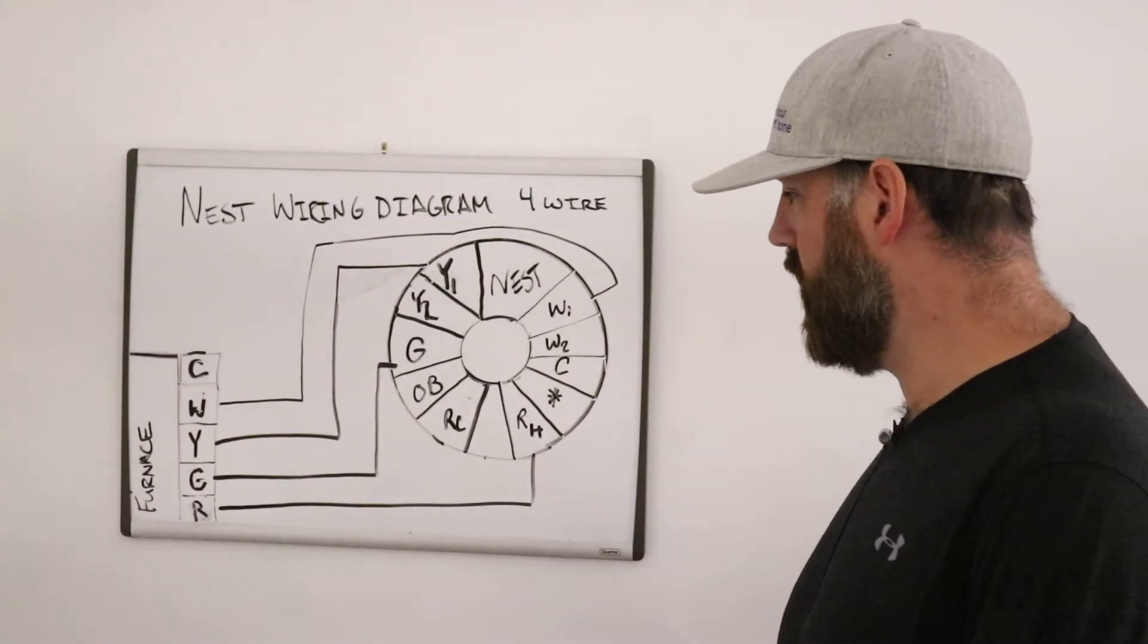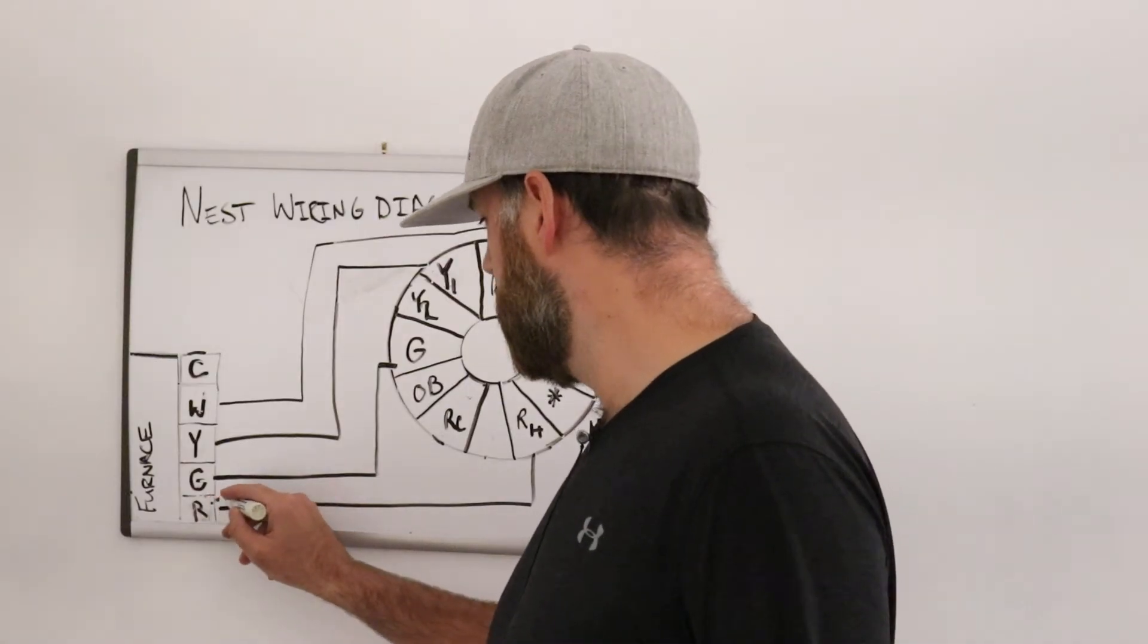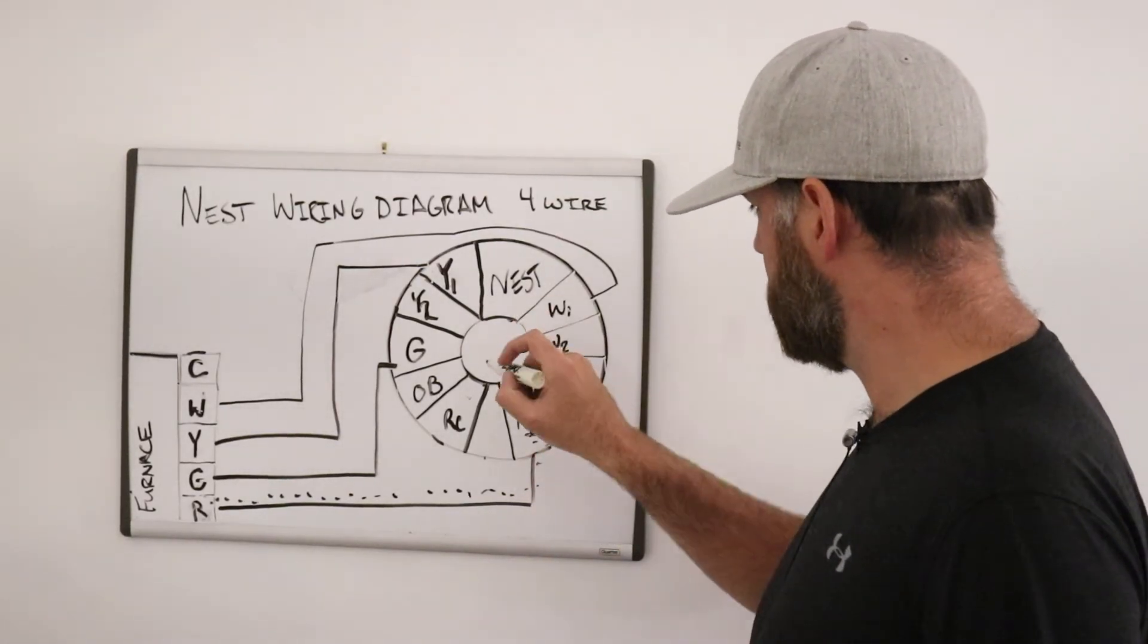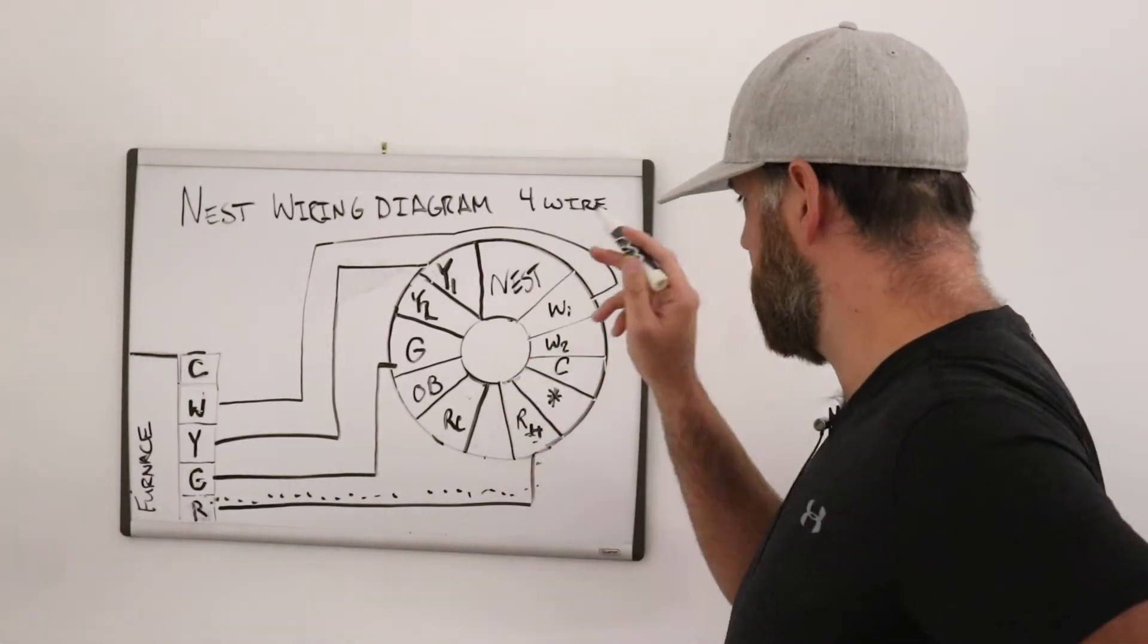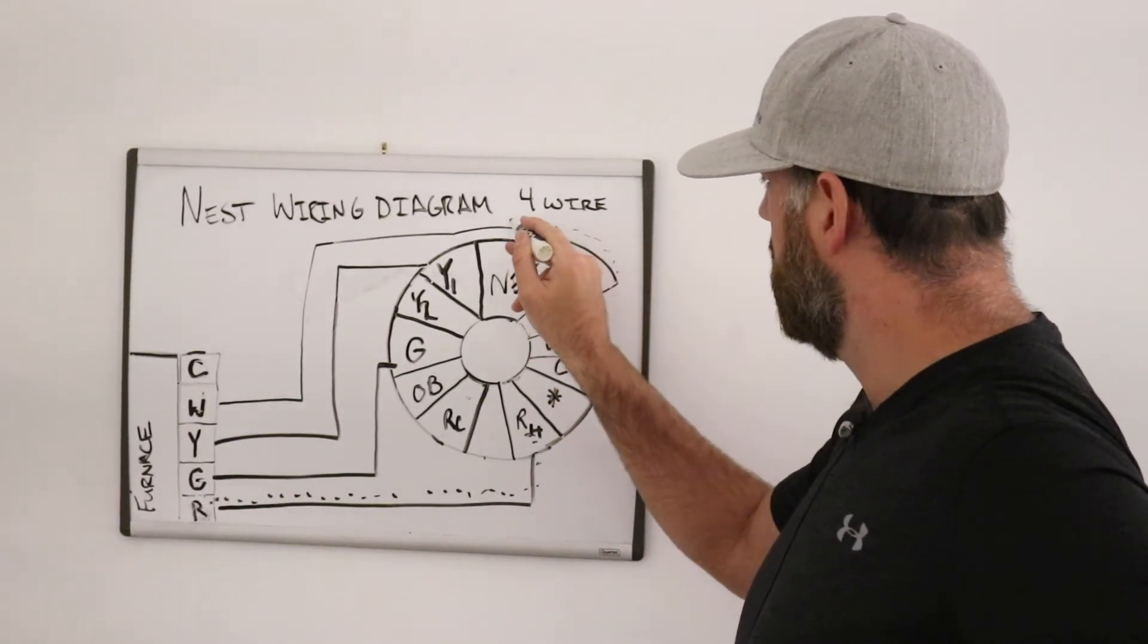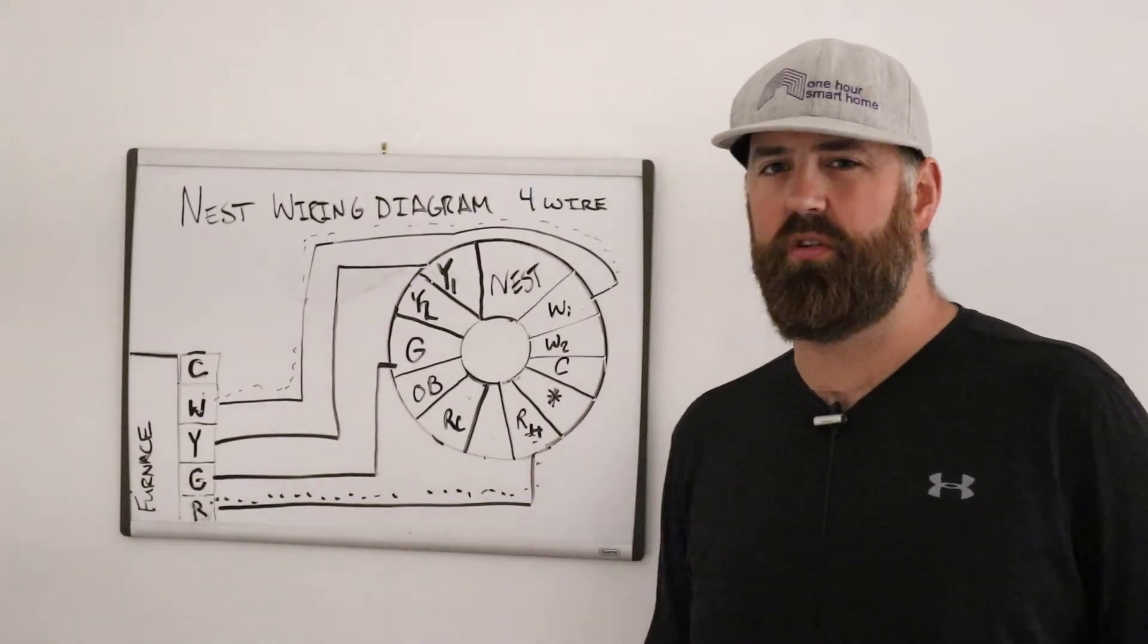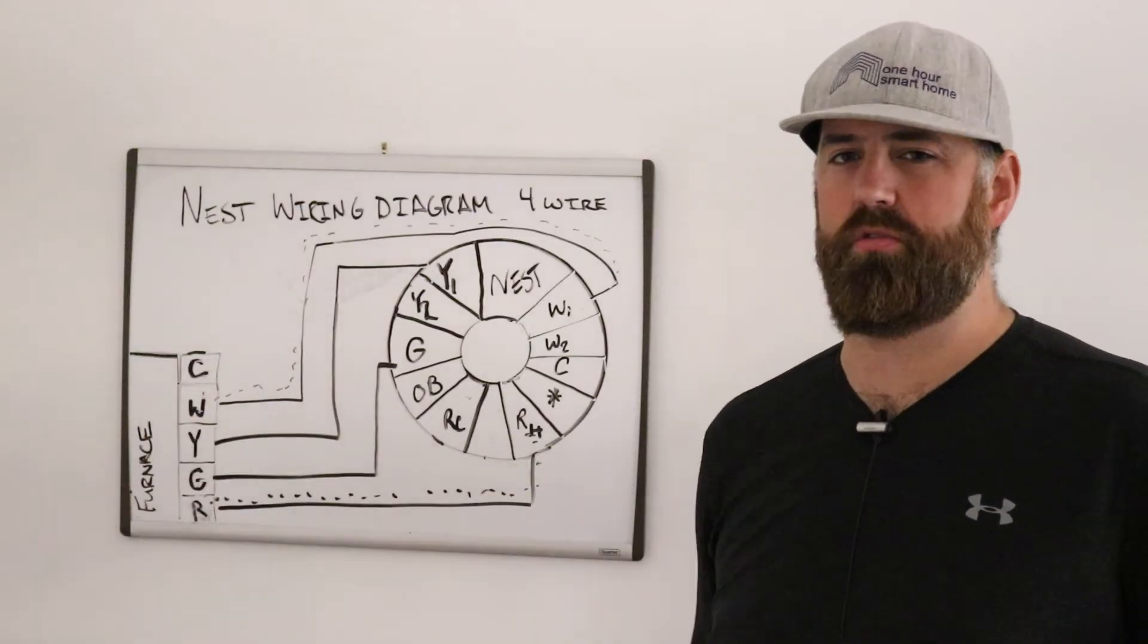So when you get a call for, let's say heat, what you have going on is you've got power coming through here from your R, your R is your power, it goes into the R, it goes into the Nest circuitry, and your Nest is saying, okay, it's time to heat. So you've got it turned up to 80, that power goes back down the W1 wire, and it flows down to the W1 terminal, and that tells your furnace to turn on the burner and start producing heat.